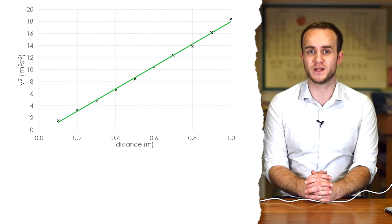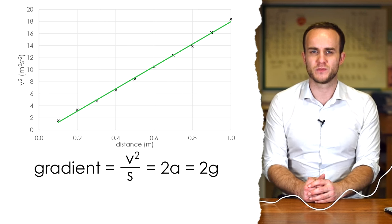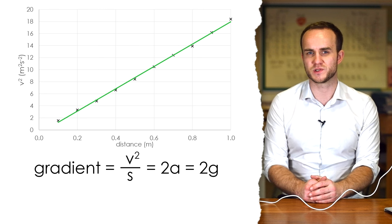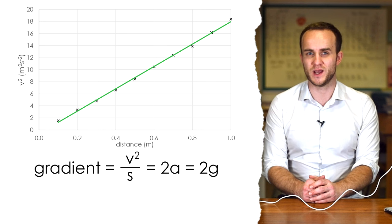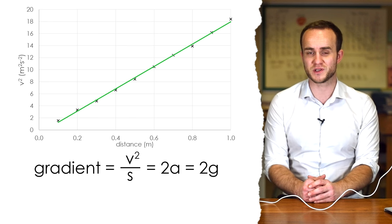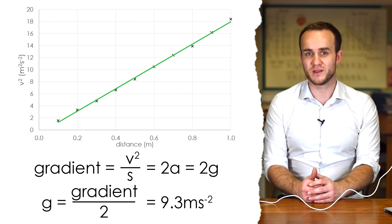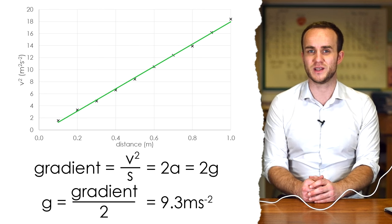Now if we plot the graph of V² against S if we find the line of best fit's gradient then we end up with V² against S. Now my gradient ends up being 18.6. Now according to the equation V² = 2AS if we rearrange it to find V² divided by S which is our gradient that gives us 2A or 2G in our case because that's what we're looking for. So therefore if 18.6 is equal to 2 times acceleration due to gravity then all we have to do is half it and that gives us an acceleration due to gravity of 9.3 meters per second squared.